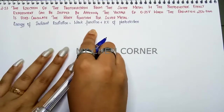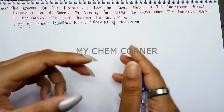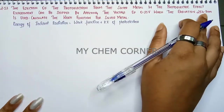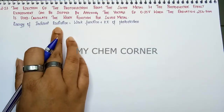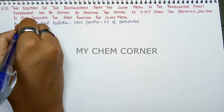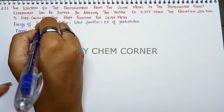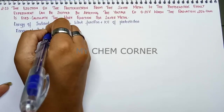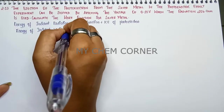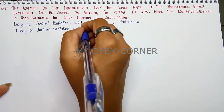From this equation you can calculate the work function, but energy of incident radiation or kinetic energy is not given to us directly in the question. So we will use our wavelength to first calculate the energy of incident radiation. Let's calculate that first — we write down the energy of incident radiation.